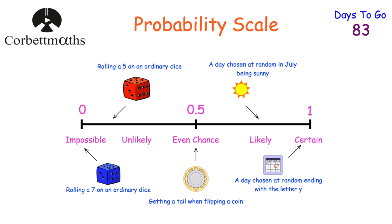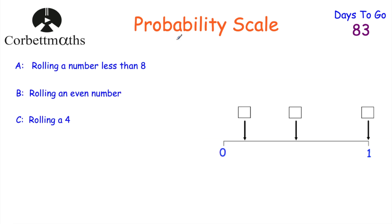Let's have a look at a probability scale question. If we roll a fair six-sided dice — one, two, three, four, five, six on the sides — we've got three events. A: rolling a number that's less than eight. B: rolling an even number. And C: rolling a four. We've got to put these letters A, B and C in boxes to show where they would go on the probability scale. Feel free to pause the video to give this a try.